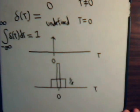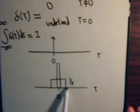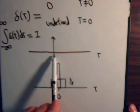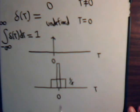But notice here, this function, this simple rectangle that we're using to try to approximate the Dirac Delta function, itself is an even function.